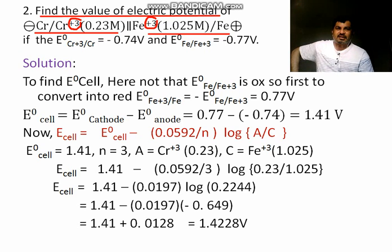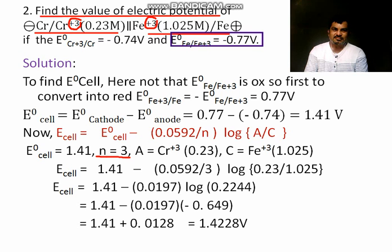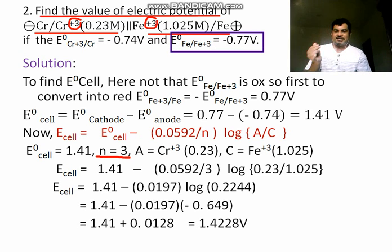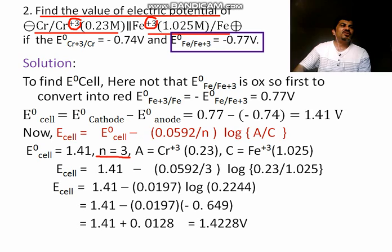So, you have to take value of n is equal to 3, see here, value of n we have taken 3. What is the count, see this, this is the count, happen here, check out this value. So I can see here, what I can see, here we have Fe to Fe plus 3, now here we have Cr plus 3 to Cr.